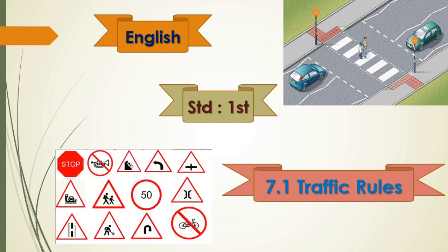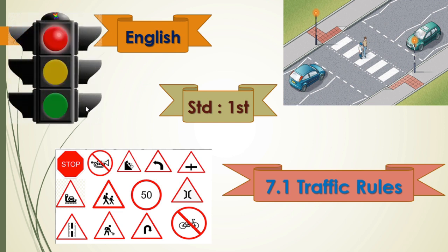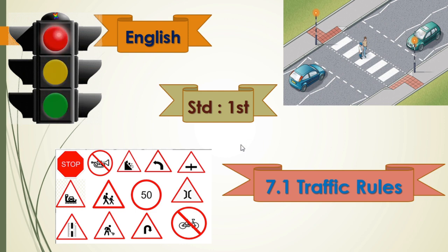Here you can see a picture. This is a road, isn't it? The cars are moving and the pedestrians are also moving. Here you can see different signs that we can see on the roads or roadsides. And this is a traffic signal. Dear children, we will learn today about the different rules of traffic signals.